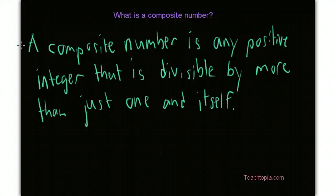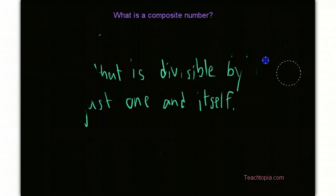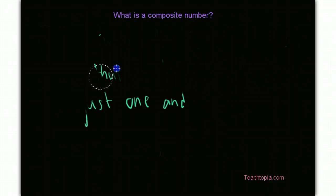Now it's time for some examples to make sure you have a very clear understanding of what a composite number is. It's about understanding what a composite number is. Okay, here we go.